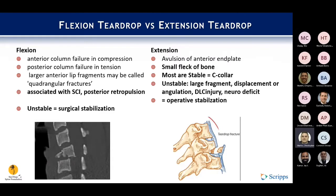It's important to distinguish flexion teardrop from extension teardrop fractures. Flexion teardrop involves anterior column failure in compression and posterior column failure in tension, with a large anterior lip fragment — sometimes called a quadrangular fracture. It is highly associated with spinal cord injury and posterior retropulsion; these are very unstable and surgically managed. Extension teardrop is usually a smaller avulsion of the anterior end plate. Most can be treated in a cervical collar, but unstable variants with large fragments, displacement, angulation, DLC injury, or neurodeficit would require operative stabilization — potentially requiring both anterior and posterior approaches.